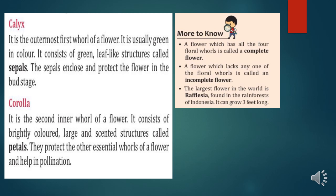The second one is Corolla. It is the second inner whorl of a flower. It consists of brightly colored, large, and scented structures called petals. The different colors of petals form the Corolla.